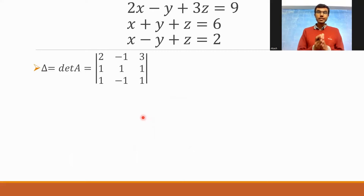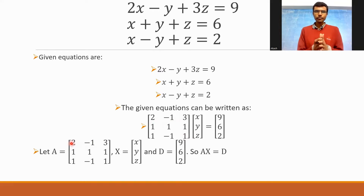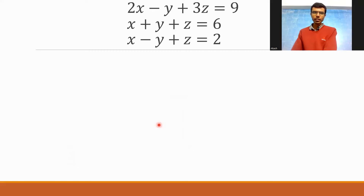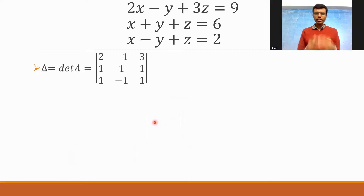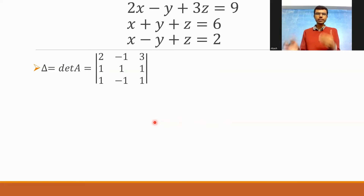Delta — this delta is nothing but the determinant of A. I'm just going to find the determinant of this matrix A to get delta. Now how to find out this determinant? It's kind of simple. In case you're not familiar, I'll explain the first determinant in detail. The next three determinants I'll go a bit fast.